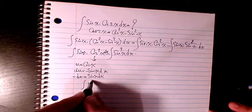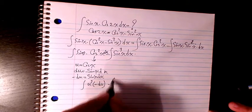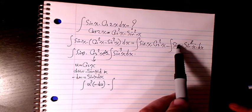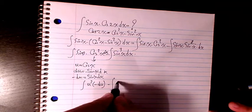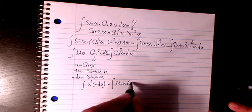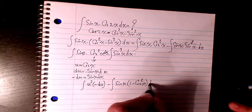u squared negative du. And the second one is sine x times sine squared x, which is sine x times one minus cosine squared x dx.